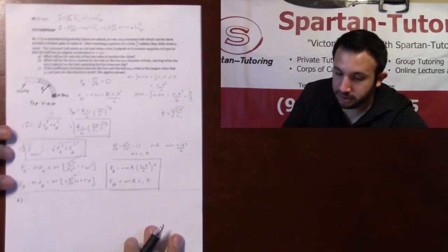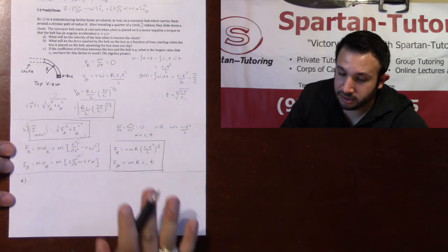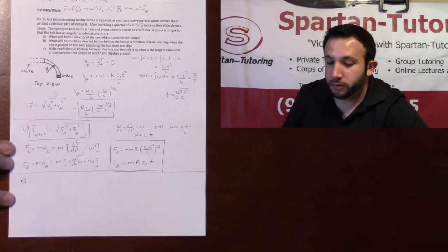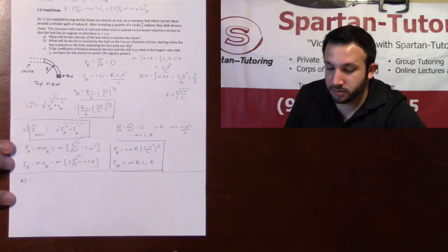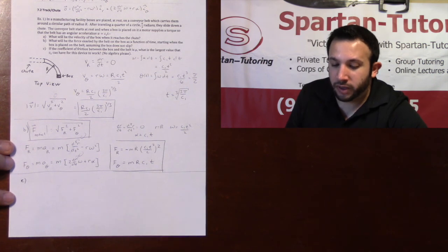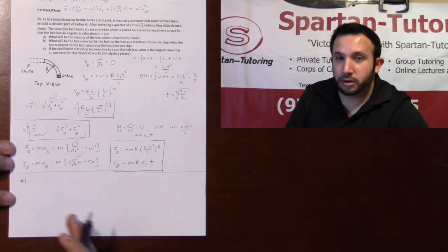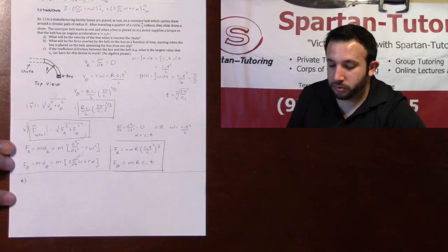Finally, let's take a look at part c. If the coefficient of friction between the box and the belt is mu, what's the largest value that c1 can be for this device to work? Once again, no algebra, please.